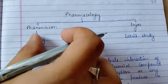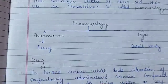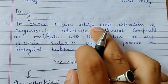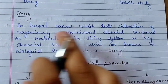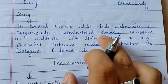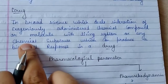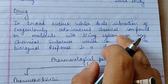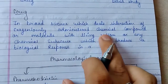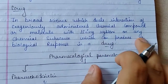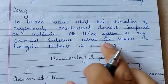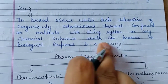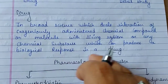A drug, in broad science, deals with the interaction of exogenously administered chemical compounds or molecules with living systems. Any chemical substance that can produce a biological response is called a drug.